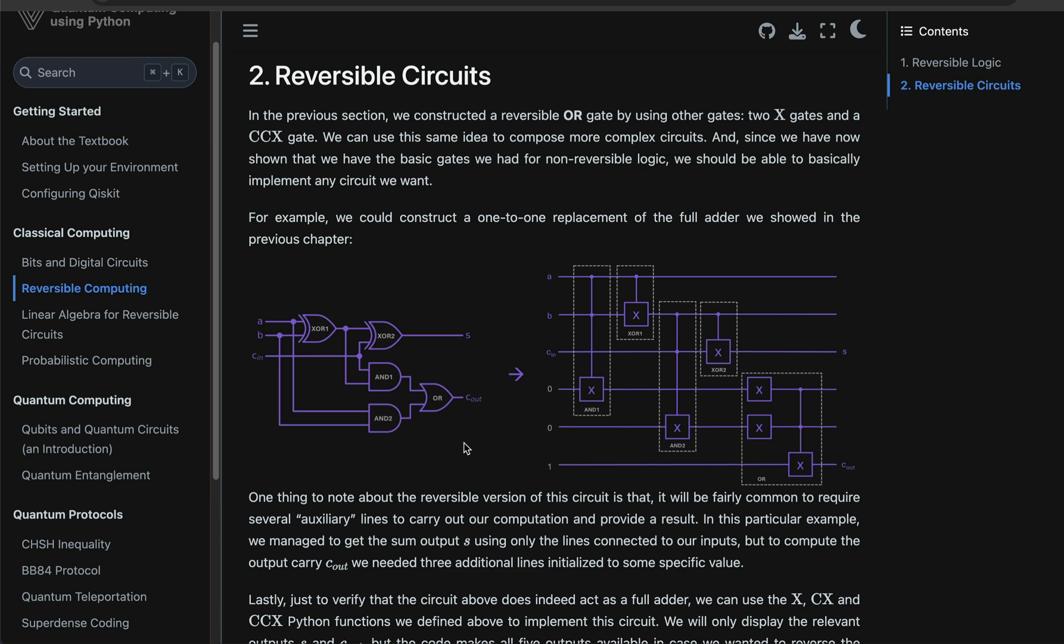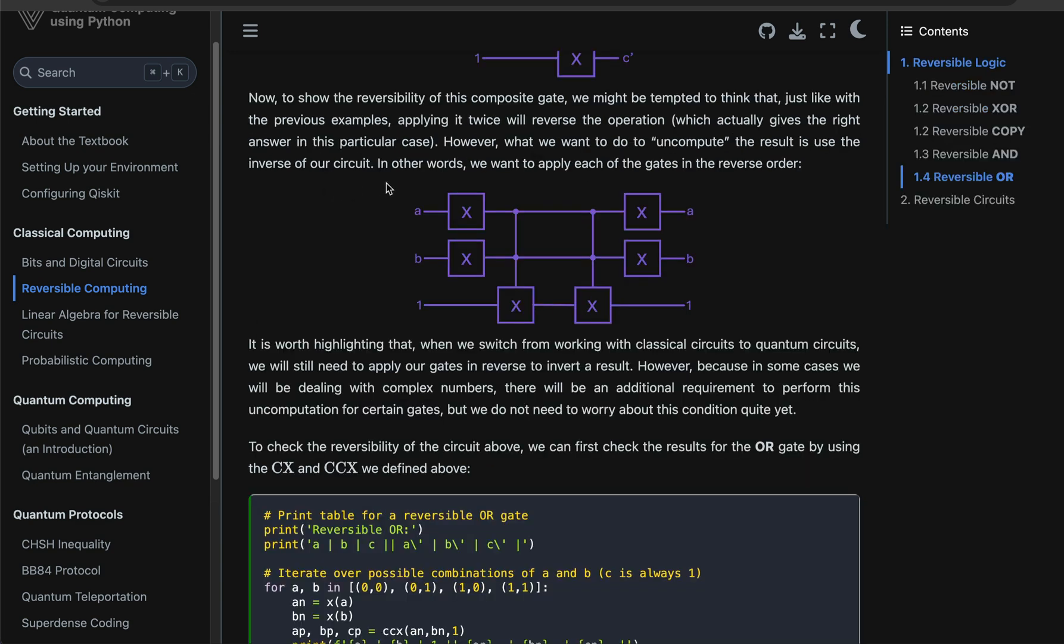One last thing I would like to mention is that we have stressed that what's important about reversible logic is that you can identify the inputs based on solely what we have at the output. But the implication of this is that then we can always construct another circuit that reverses our output to give us back our input. And the way we do this is to apply the same gates we have, but in the reverse order. For example, here we show that for the OR gate we just demonstrated, if we wanted to always recover the same inputs, we just apply the control-control-X gate followed by the X gates that we applied originally.